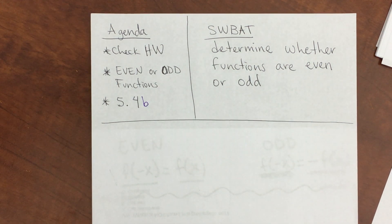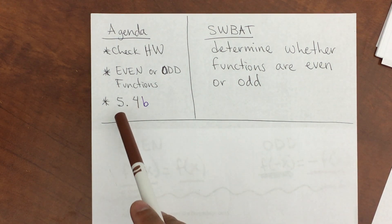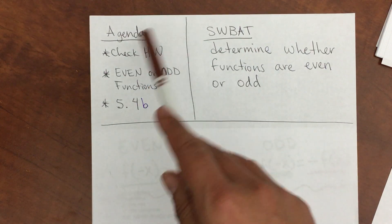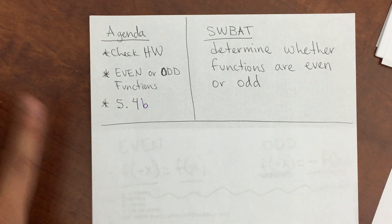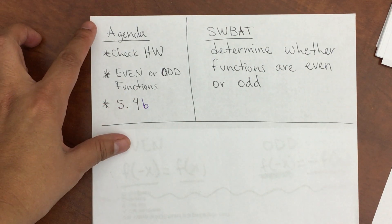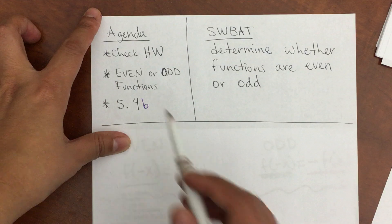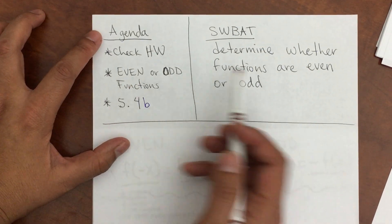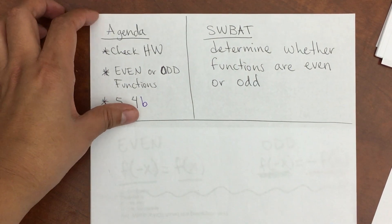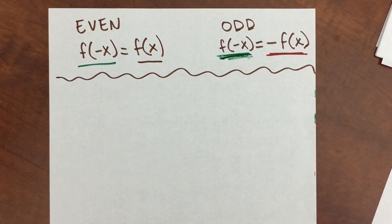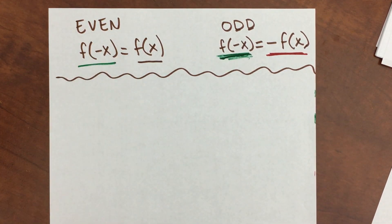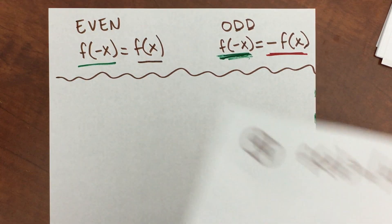Hello students, today we're going to continue with 5.4B. It's the same agenda — I just added a B here because it was going to be a super long video, so I decided to break it in two. We're going to decide whether functions are even or odd, whether they have even or odd symmetry. These are the formulas that we'll be using to decide whether they are even or odd.